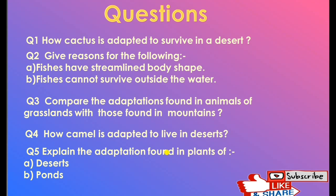Question 2: Give reasons. Fish have a streamlined body shape so that they can easily swim in water. Fish cannot survive outside water because they have gills which extract oxygen from water, so they cannot breathe in air — they can only survive in water.